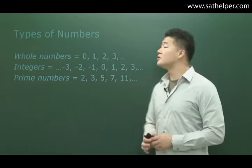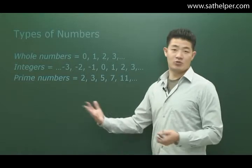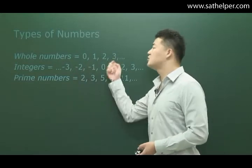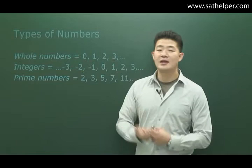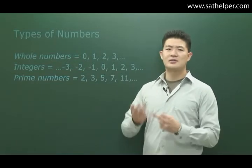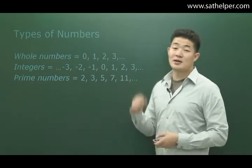So starting off, whole numbers. Whole numbers include any numbers that are whole, right? So including 0, 1, 2, 3, 4, 5, 6, whatever. Does not include negative numbers, does not include decimals or fractions, just whole numbers that are positive.